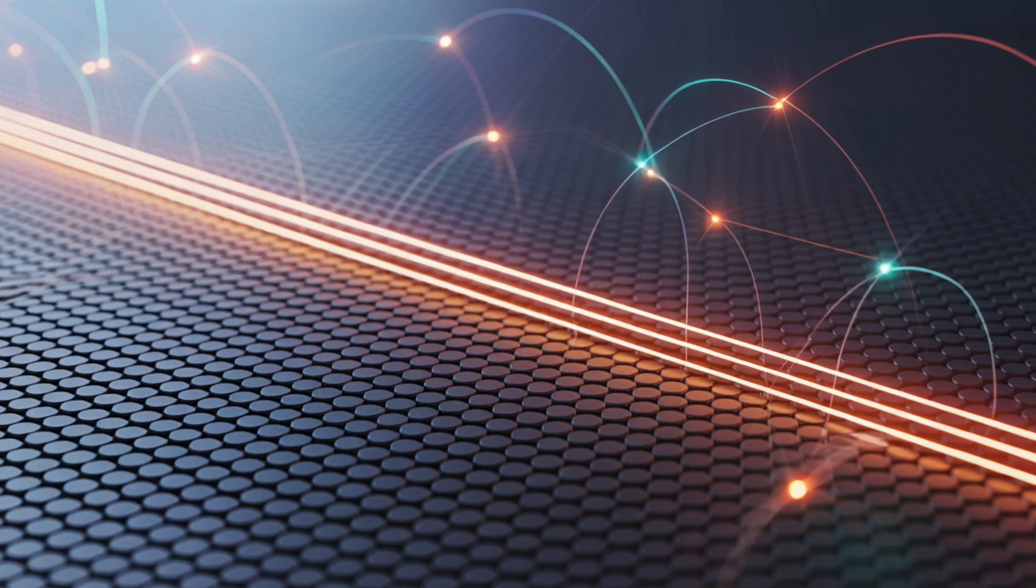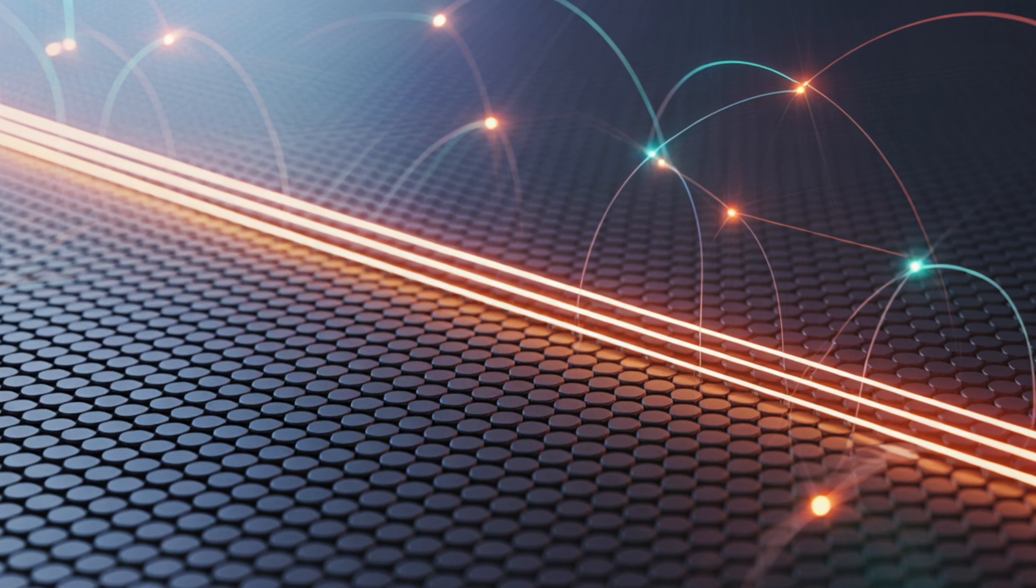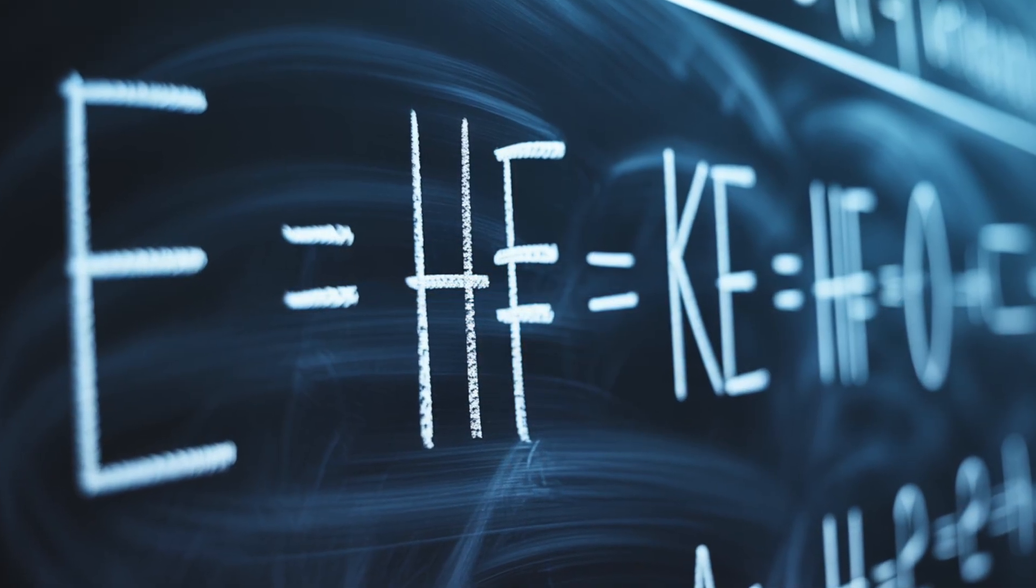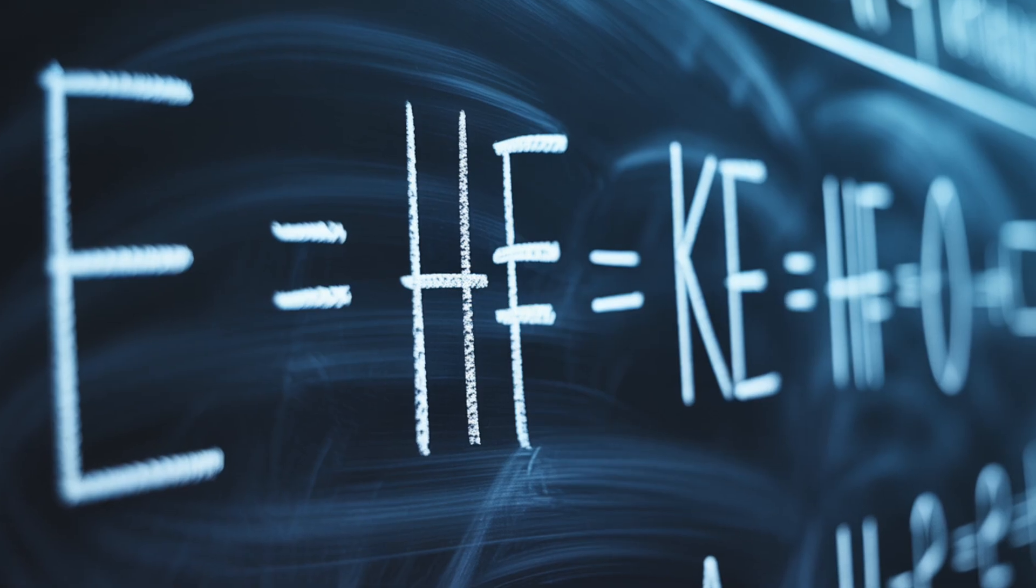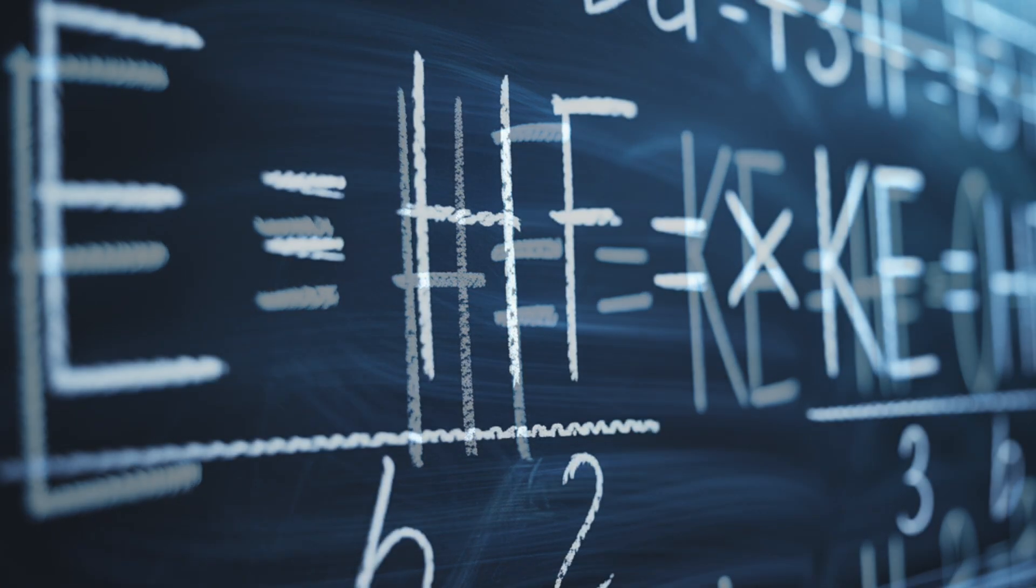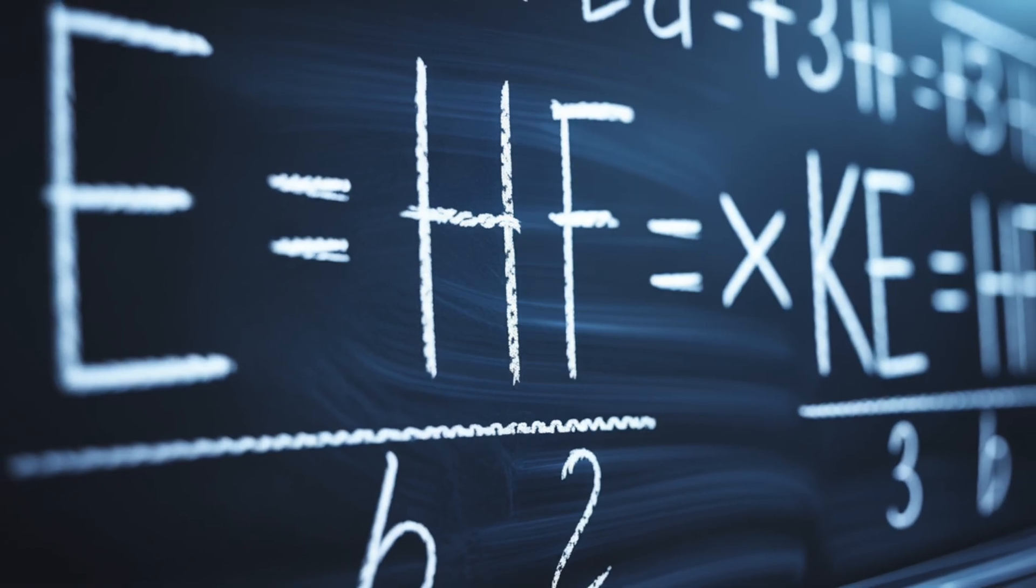Einstein formalized the photoelectric effect with elegant precision. Kinetic energy, KE equals HF minus phi, where phi is the work function, the minimum energy required to eject an electron from the material. This simple equation explained every experimental anomaly.